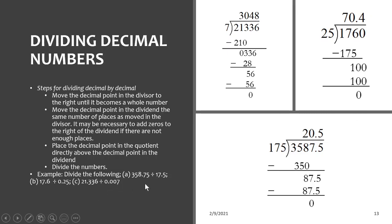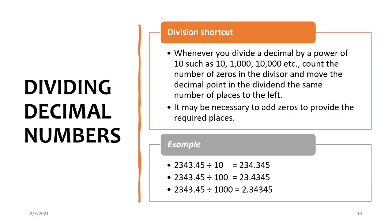The last division example also moves three decimal places making both numbers whole, then divide as whole numbers. Shortcut for division: when dividing a decimal by a power of 10 like 10, 100, or 1000, count the number of zeros and move the decimal point in the dividend that many places to the left. For example, 2343.45 ÷ 10 — move one place left: 234.345. Divide by 100 — move two places: 23.4345. Divide by 1000 — move three places: 2.343.